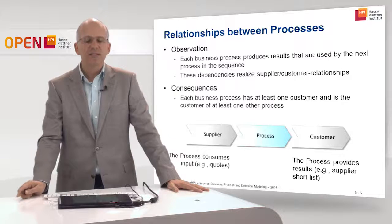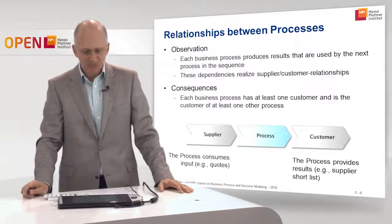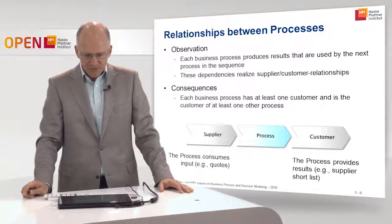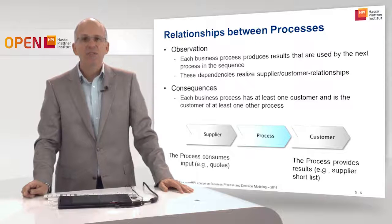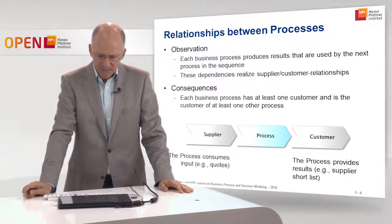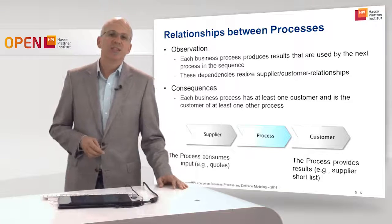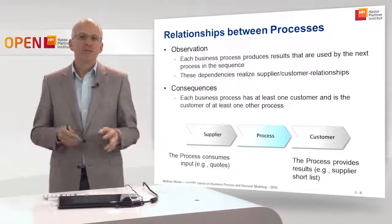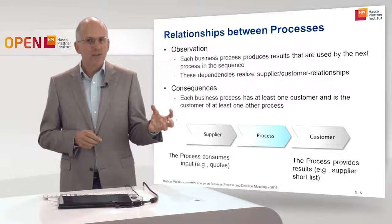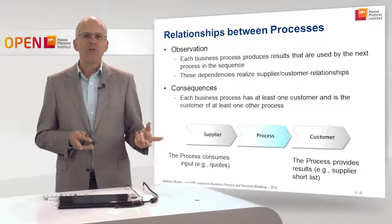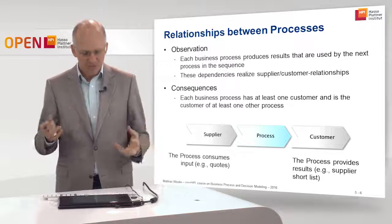We can formulate this as an observation: each business process produces results that are used by the next process in the sequence, and these dependencies realize a supplier-customer relationship. Each business process has at least one customer, and is itself the customer of at least one other process. A process with no customer is probably unnecessary, and a process that requires input with no supplying process also indicates a problem.